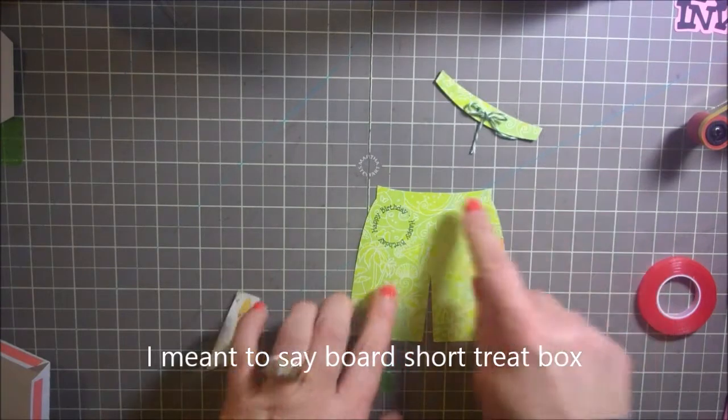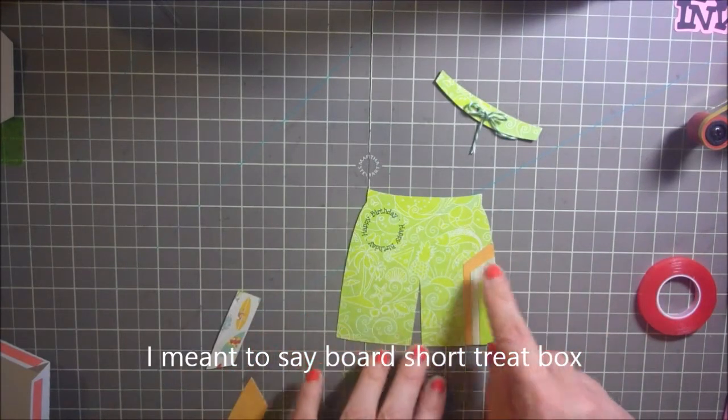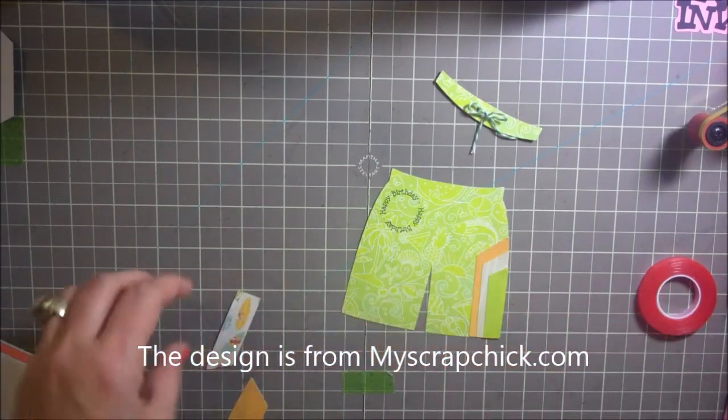I've already got started here. This is the pattern paper. I believe it's called Paradise Beach. I've just cut some layers here that go with it.